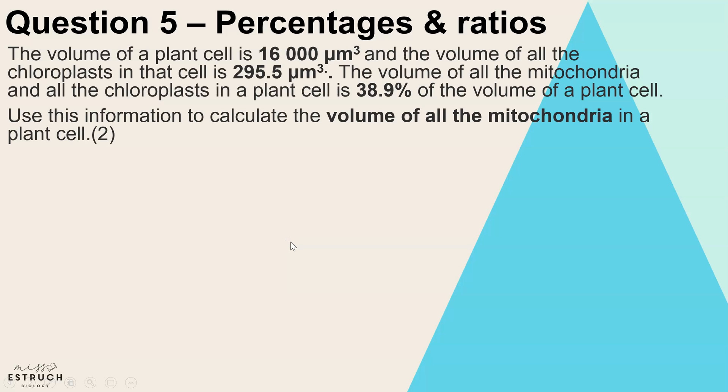Question five: percentages and ratios. The volume of a plant cell is 16,000 micrometers cubed, and the volume of all the chloroplasts in that cell is 295.5 micrometers cubed. The volume of all the mitochondria and the chloroplasts in the cell is 38.9 percent of the volume of the plant cell. So we need to use all of that information to calculate the volume of all the mitochondria.